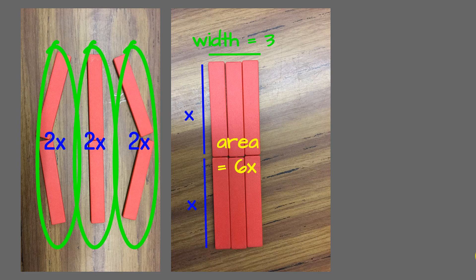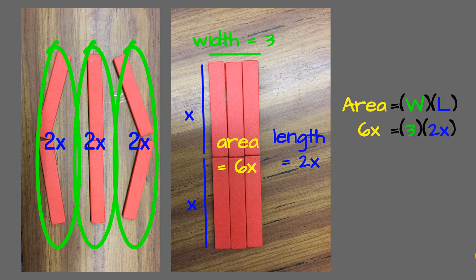But students will tell us that we have a width of 3 and a length of 1x, 2x's. We want to make this really clear for students that that length is 2x, and we want to connect that back to our understanding of area being length times width.